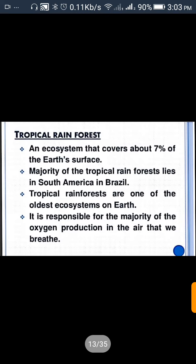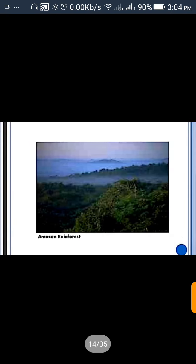Tropical Rainforest is an ecosystem that covers about seven percent of the Earth's surface. The majority of the tropical rainforest lies in South America, in Brazil. Tropical rainforests are one of the oldest ecosystems on Earth. They are responsible for the majority of oxygen production in the air that we breathe. The most notable source of this oxygen production is the Amazon Rainforest.